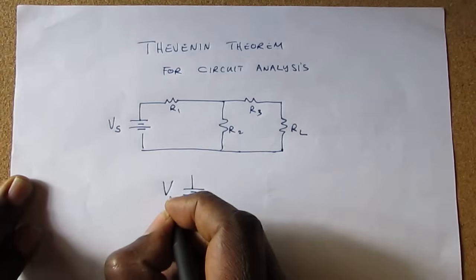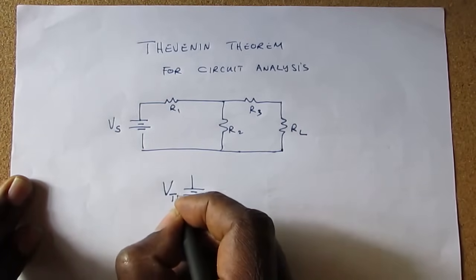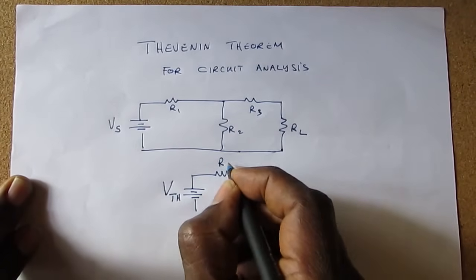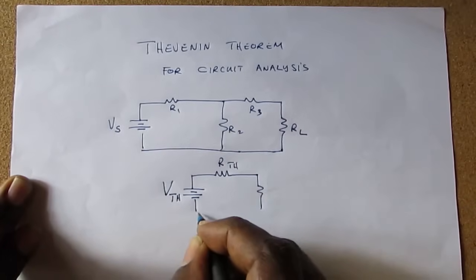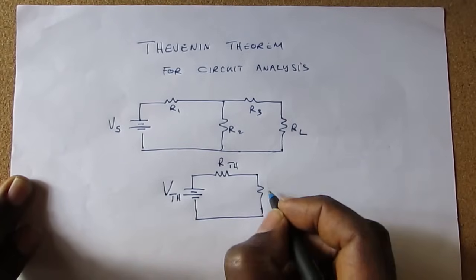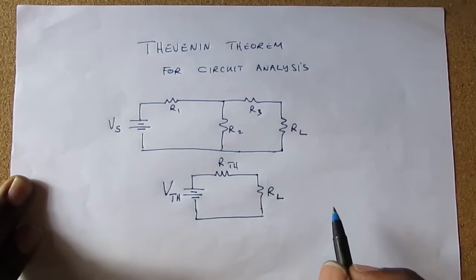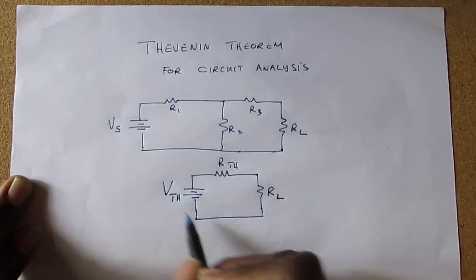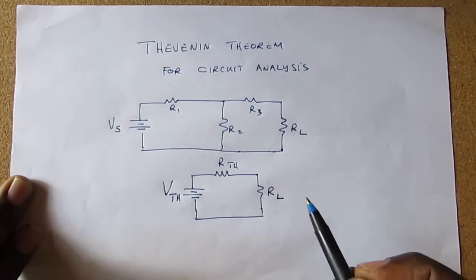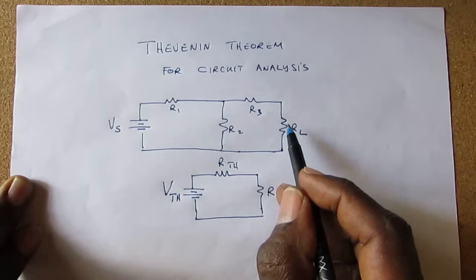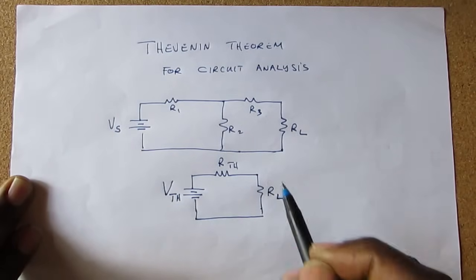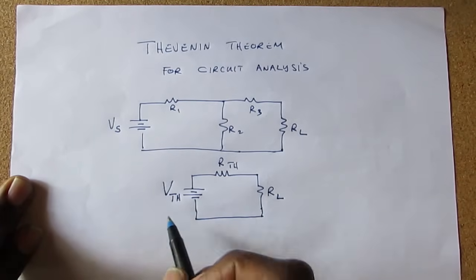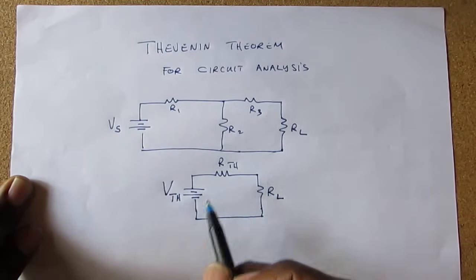This V would now be the Thevenin voltage. The single resistor would be the resistor Thevenin, and the RL would be attached to this circuit. This circuit would behave exactly like this circuit as it relates to the load. So we will now show you how to calculate the Thevenin voltage and the Thevenin resistance.